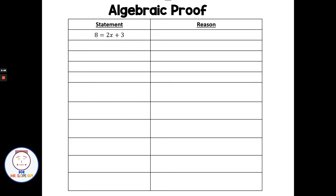Let's look at an algebraic proof. We go through steps and solve an equation, then state the reason — not just what the next step is, but what mathematical property backs it up. On the left side we have our statements, on the right side we have a reason. The most common reason is 'given' — that's what we're starting with: 8 equals 2x plus 3. If I subtract 3 from each side, that's the subtraction property of equality.